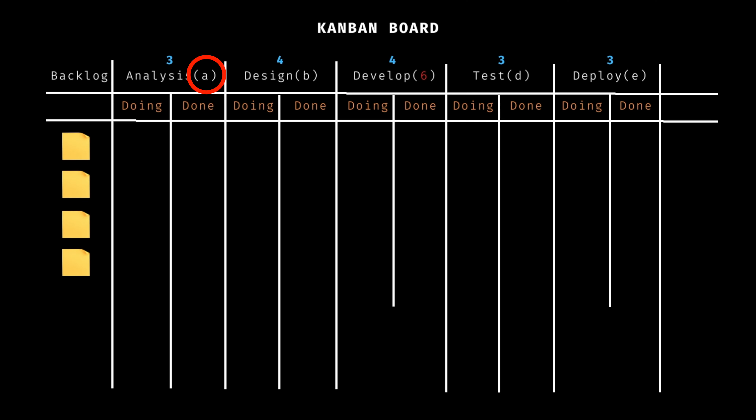Now, after doing all of this, calculating the WIP limits is as simple as adding a 50% buffer to each of these numbers. Adding 50% buffer gives us a WIP limit of five in the analysis column, six in the design column, five in the test column, and five in the deploy column. There you have it — your Kanban board is now set up with carefully calculated WIP limits. Remember, limits may change, so make sure to keep monitoring the team's progress and adjust the WIP limits as needed to optimize your workflow.